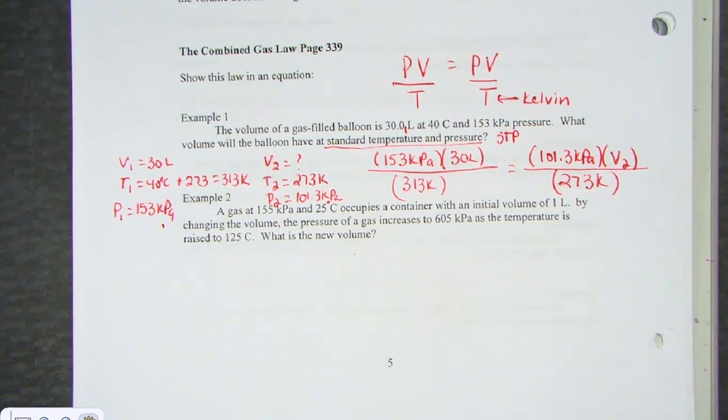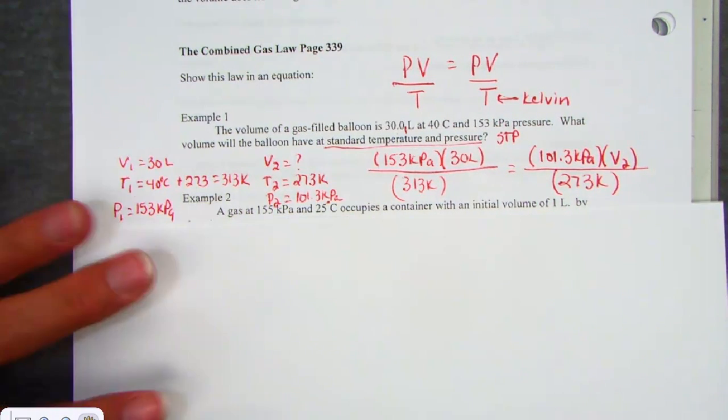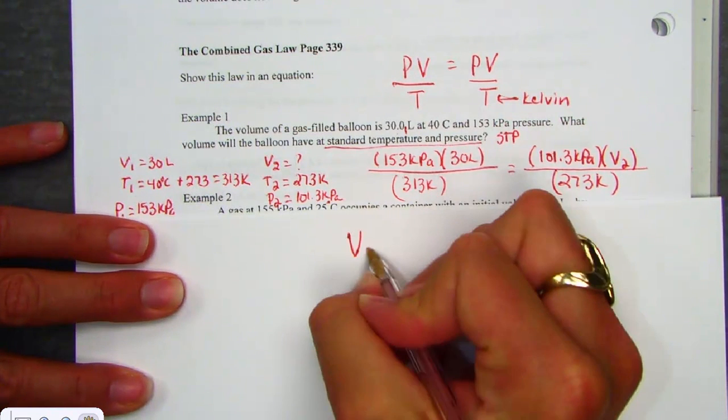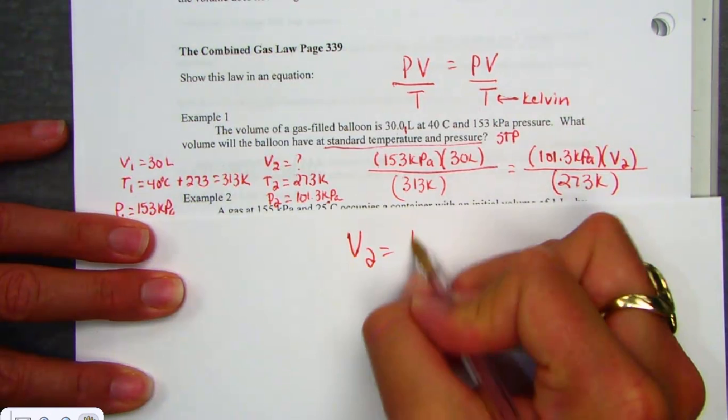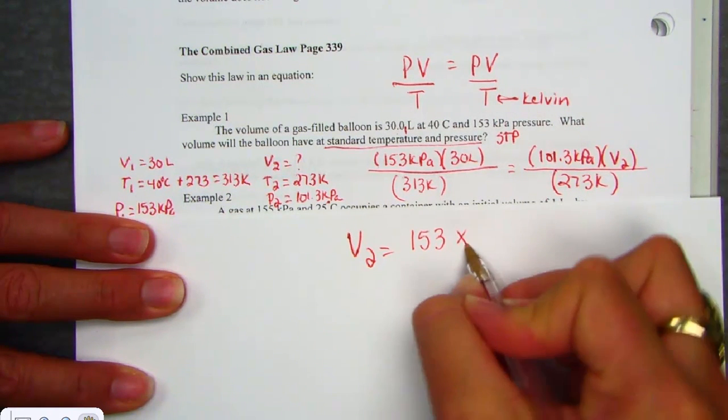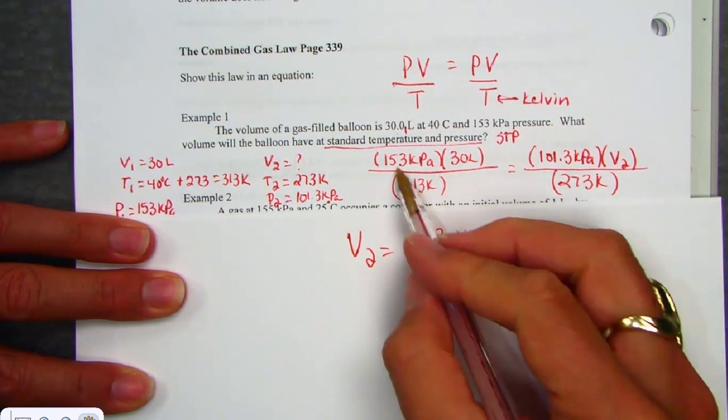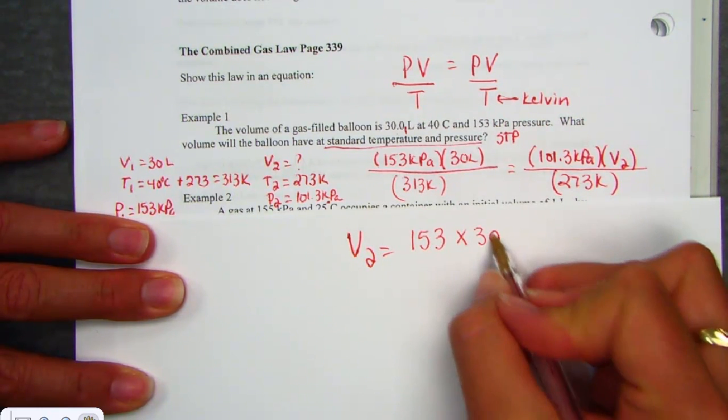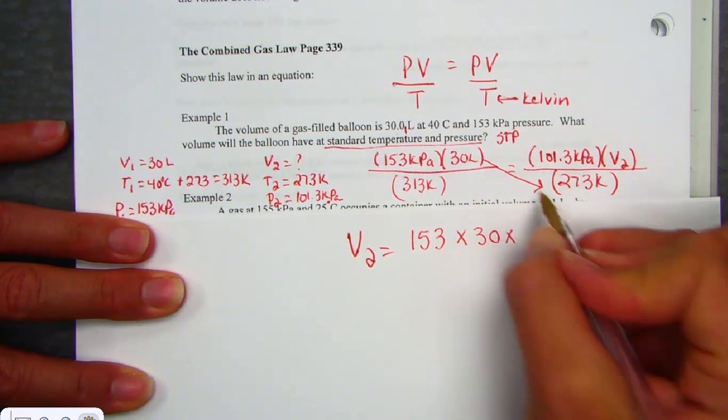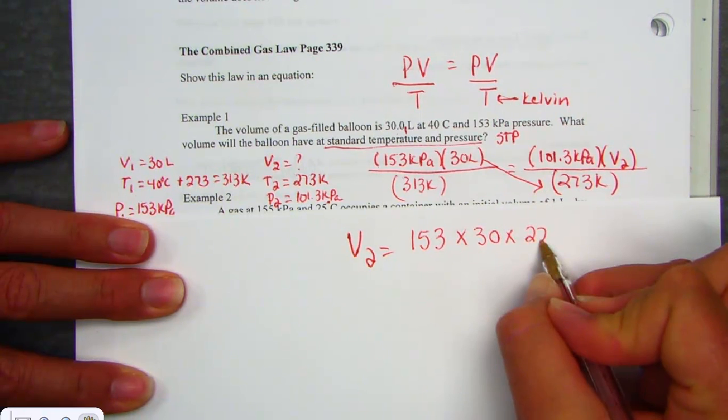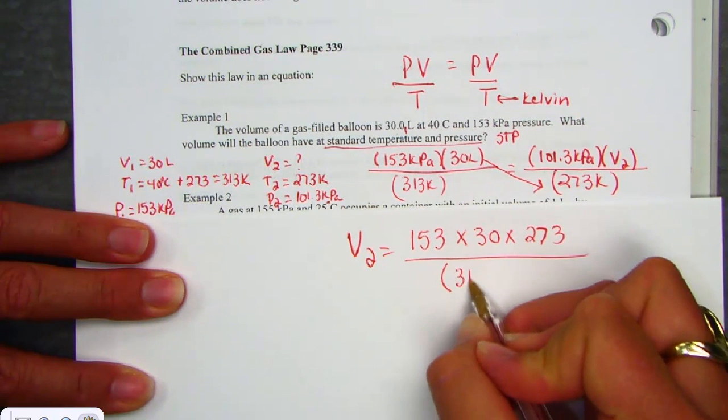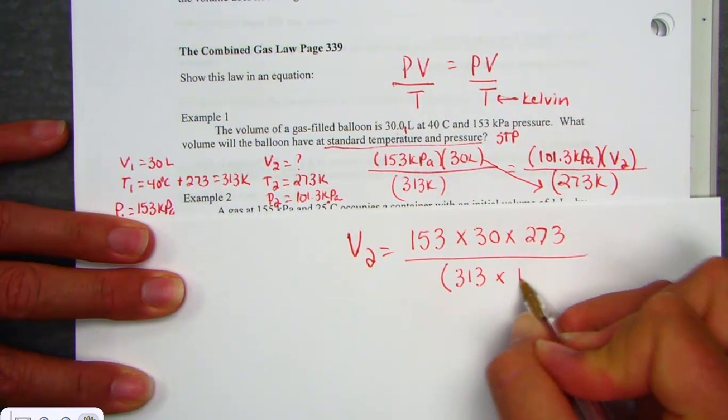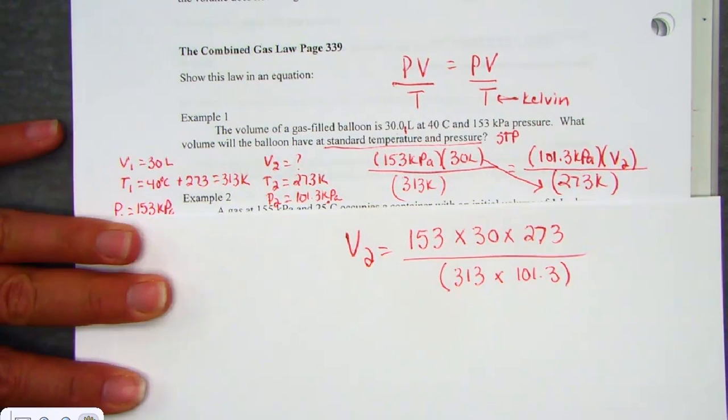The key sequence here, to pull out V2, we always start by cross-multiplying the side without the variable. So just looking at key sequence to pull out this V2 variable, we start with 153 times 30, then come down to the 273. And then remember in a parenthesis, we divide by the other two numbers. Without that parenthesis, we'll get a calculator error.